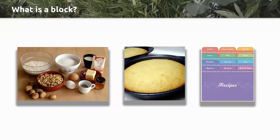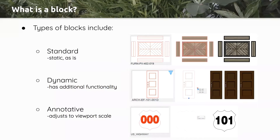A good analogy: your lines, hatches, and circles are like ingredients. When you combine them into a block, it's like a finished cake — you can place cakes all over your drawing. The block definition is like the recipe, so CAD can easily refer to the recipe book for all your blocks. This makes your life much easier.